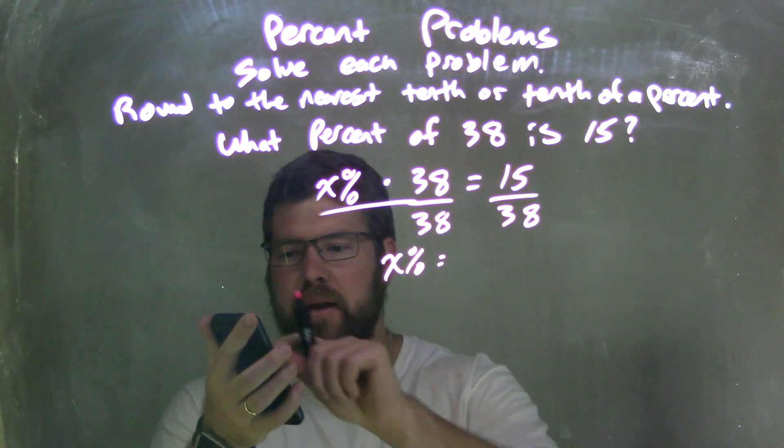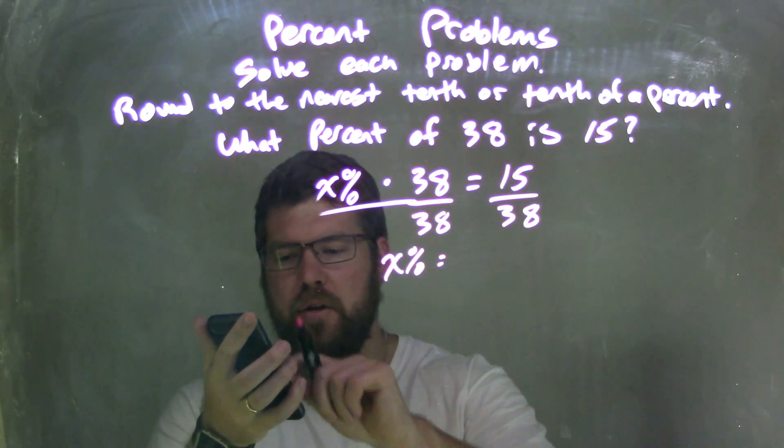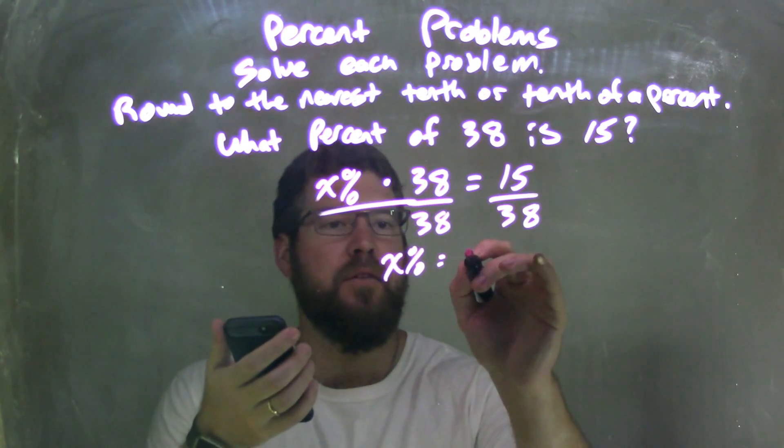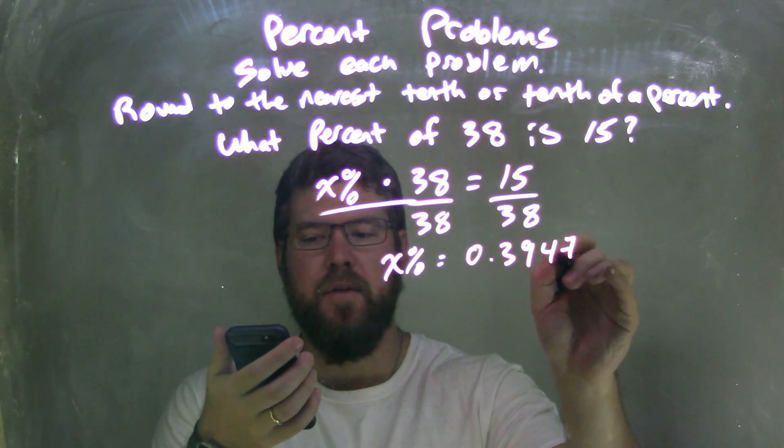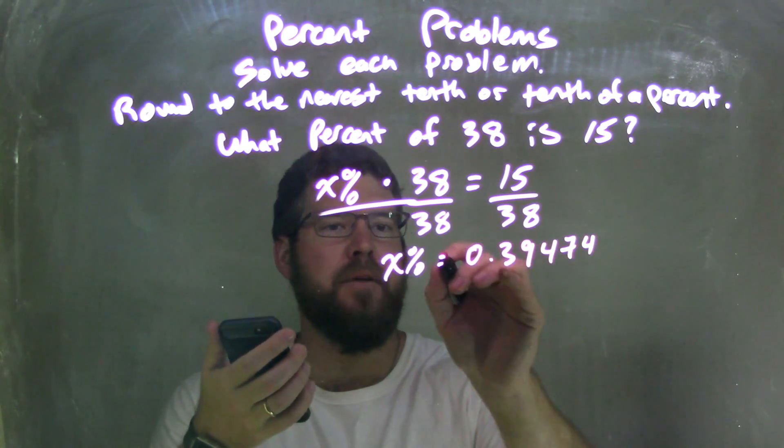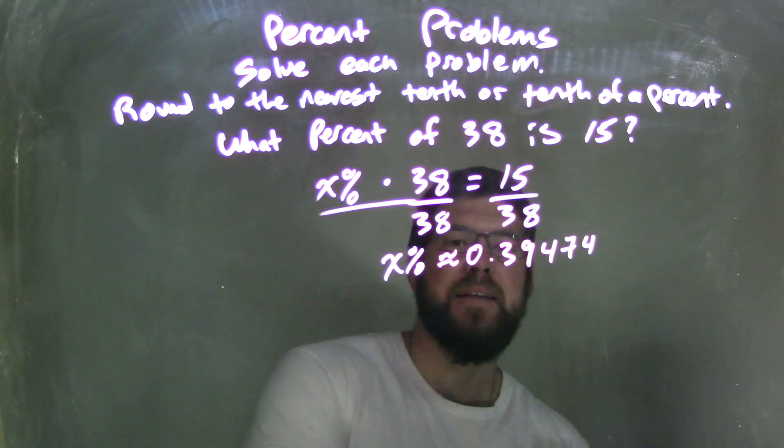Well, I'm going to use my calculator here. 15 divided by 38 comes out to be 0.39474. That's rounded. But that's not a percent. That's my decimal.